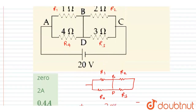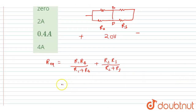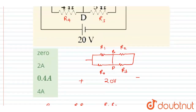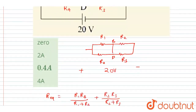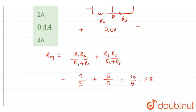R1 is 1 ohm and R4 is 4 ohm, so 1×4 = 4 and 1+4 = 5. For R2 and R3: R2 is 2 ohm and R3 is 3 ohm, so 2×3 = 6 and 2+3 = 5. Therefore R_equivalent = 4/5 + 6/5 = 10/5 = 2 ohm. So we got the net resistance of the circuit.